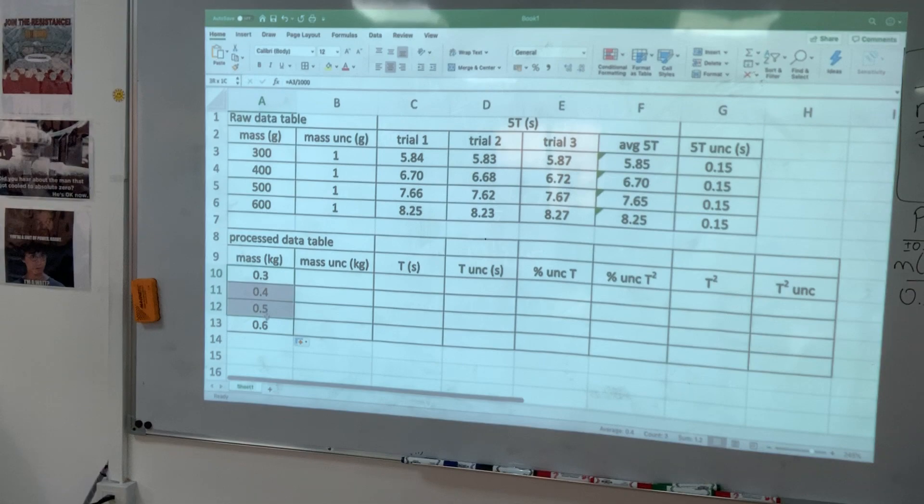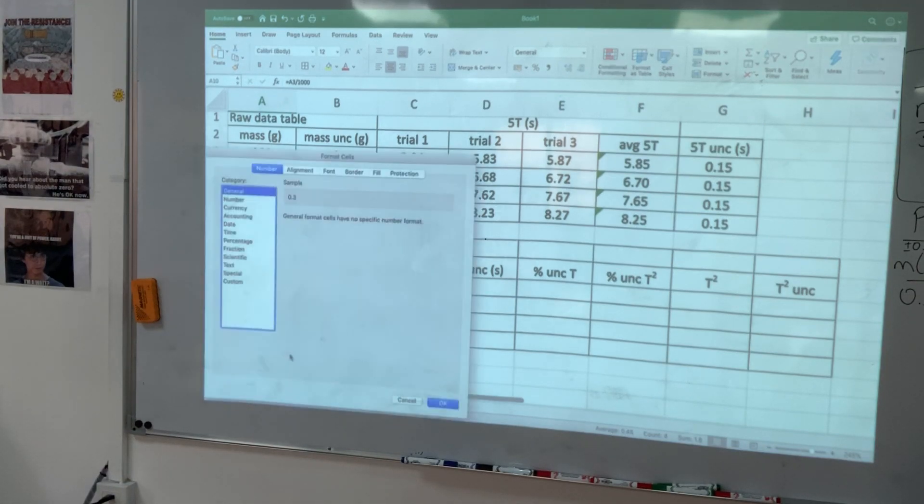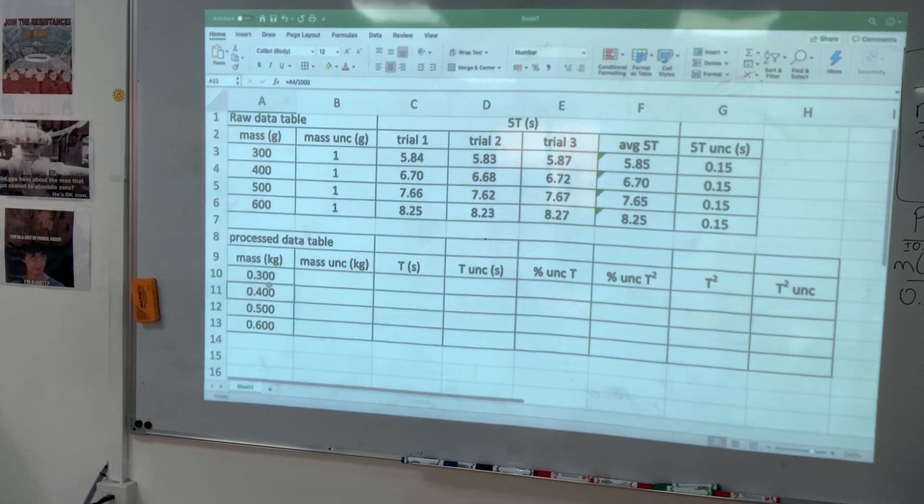But I want these to be in three decimal places. Format, number, three decimal places. There we go, fixed it.